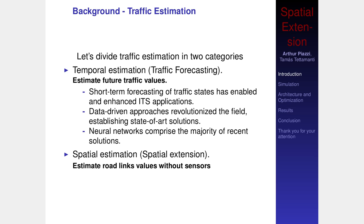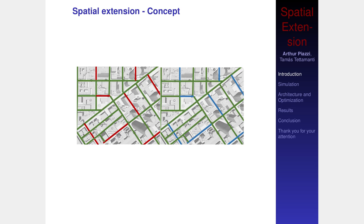We can divide traffic estimation into two branches. The temporal estimation uses past values to predict future ones, which can be useful for several applications. The other branch is spatial extension, which is a link-to-link estimation. To better explain this, we can see these two figures. The figure on the left shows a map with green links — links with sensors — and road links without sensors, where we have no measurements available. The task is to use the links with measurements to predict the others, extending the coverage of the monitoring system.